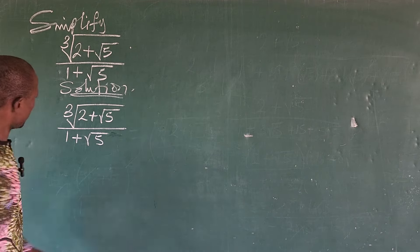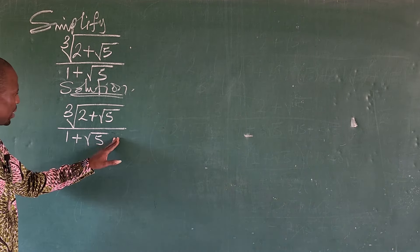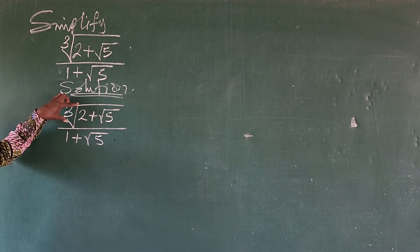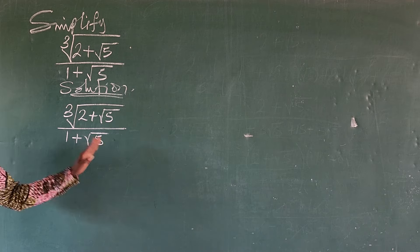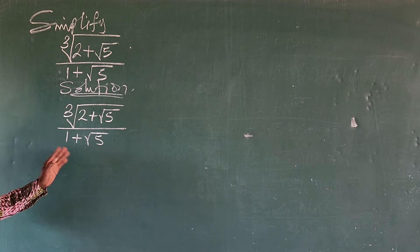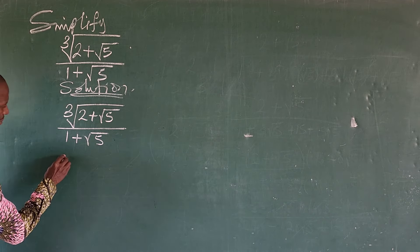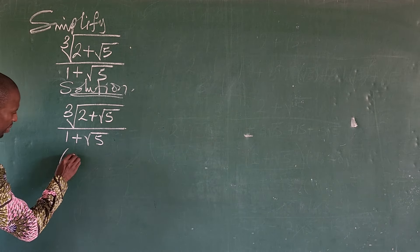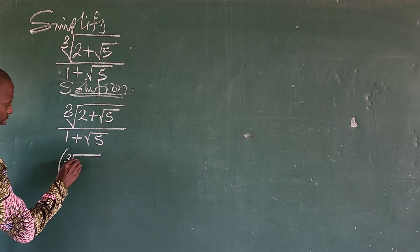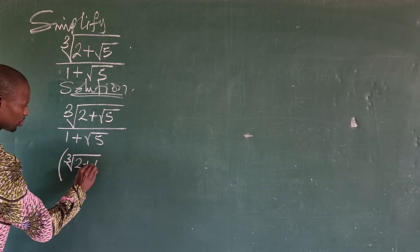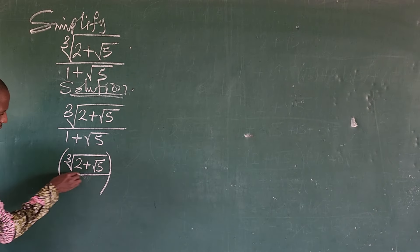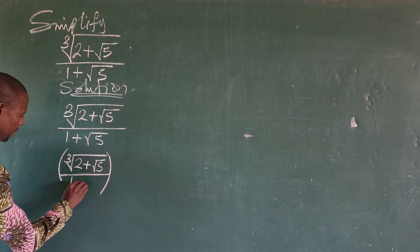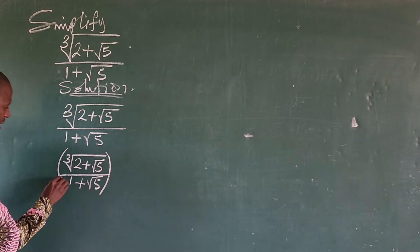So how do we simplify this? All we need to do is to eliminate this cube root sign. And how do we eliminate that? It's to take the cube of everything — both the numerator and the denominator. So we're going to have this in brackets: the cube root of 2 plus the square root of 5, all over 1 plus the square root of 5.